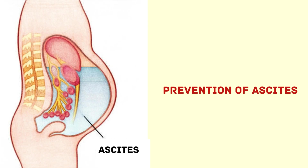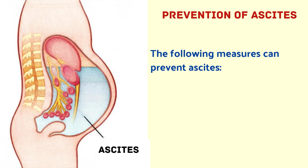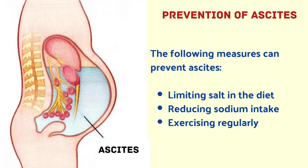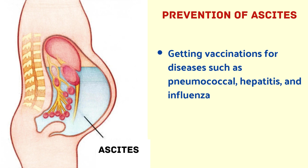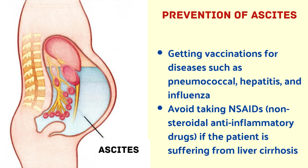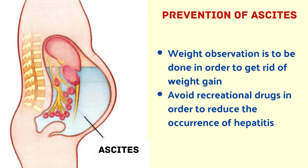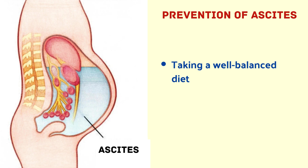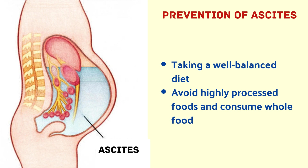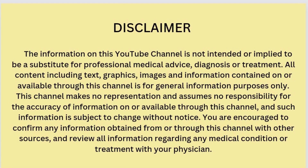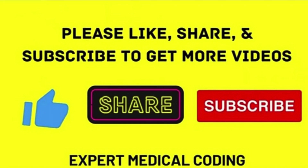Now let us discuss prevention of ascites. Preventive measures include limiting salt in the diet and reducing sodium intake, exercising regularly, limiting fluid intake, getting vaccinations for diseases such as pneumococcal, hepatitis, and influenza, avoiding NSAIDs if the patient has liver cirrhosis, monitoring weight to prevent weight gain, avoiding recreational drugs to reduce the occurrence of hepatitis, eating a well-balanced diet, avoiding highly processed foods and consuming whole foods, and avoiding smoking and alcohol. Please like, share, and subscribe to Expert Medical Coding. Thanks for watching.